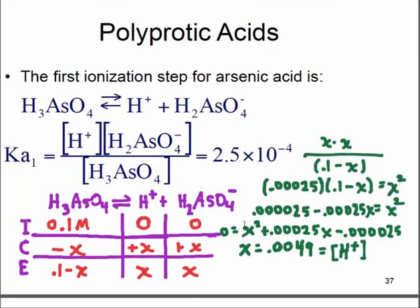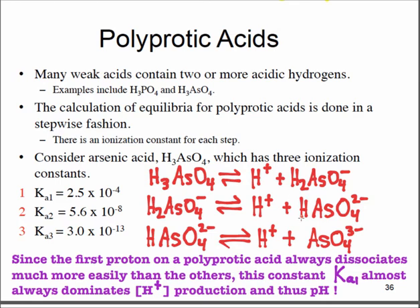The only time we would need to use or consider these other two equilibria is if, say in the future, we're going to think about buffers. I could make a buffer with potassium dihydrogen arsenate and potassium monohydrogen arsenate. If I was wanting to make a buffer with a pH close to 8-ish or something like that, I might actually choose this combination of salts in aqueous solution. We'll talk about buffers later.